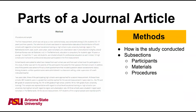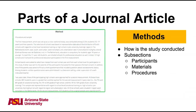Next is the method section, which explains how the study is conducted. There are three common subsections in the overall method section: participants, materials, and procedures. The participant subsection discusses the people in the research study and will include information like gender, age, and demographics. The material subsection will include information about any equipment used, like surveys, measures, and software. The procedure subsection will discuss the steps used in the experiment from start to finish.